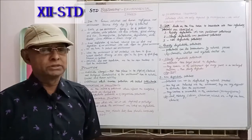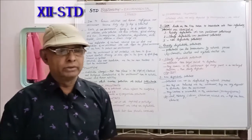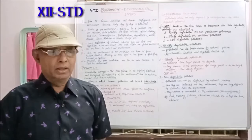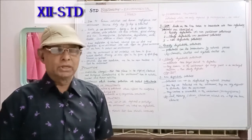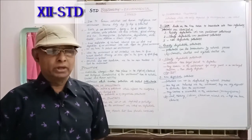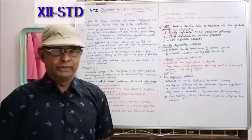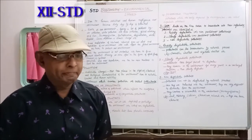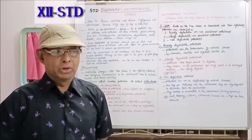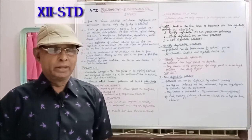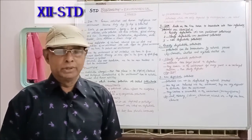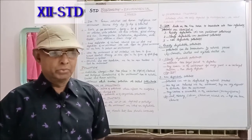The pollutants are classified into different types. There are two types of classification. In the first type of classification, based on the nature of pollutants which affects the ecosystem, pollutants are classified into: number one, non-degradable pollutants, and number two, degradable pollutants.